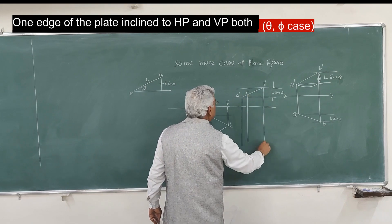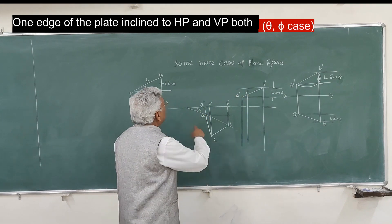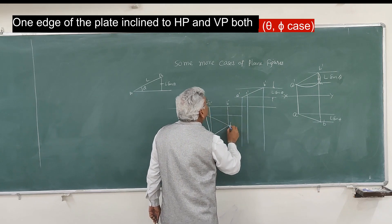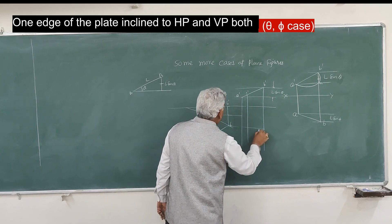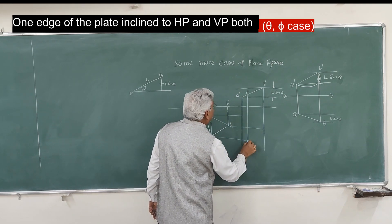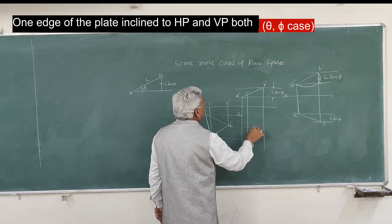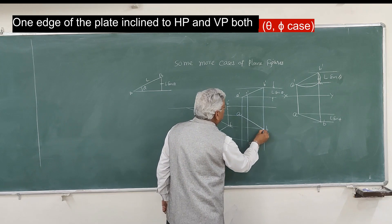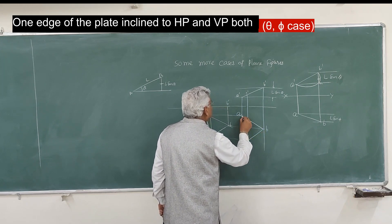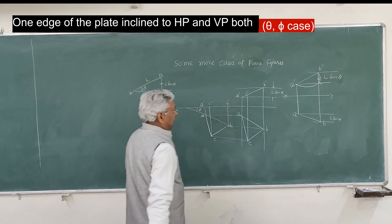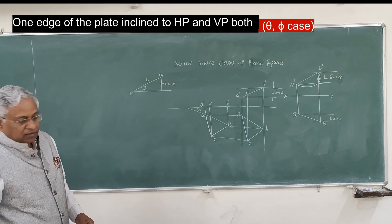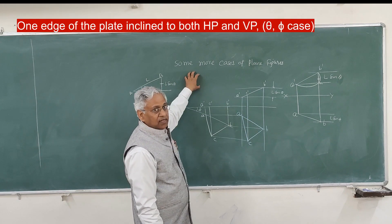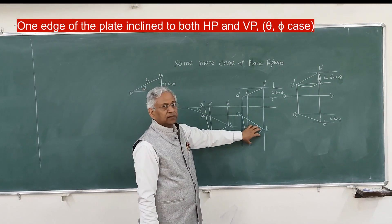From each point in the elevation, move perpendicular to the ground line, and from each point in the plan, move parallel to the ground line — you get the new plan, which is A, B, C. That is the new plan and elevation.